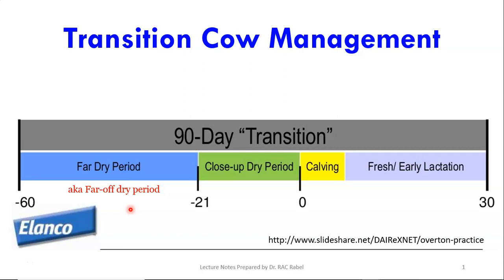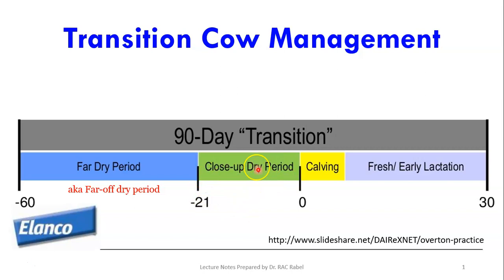During the previous lecture we talked about the drying off procedure. In this lecture on transition cow management, we will talk about the actual dry cow period. The transition cow period has been defined differently by various books — some define a 90-day transition including all of the dry period and the first 30 days after calving, while others use a 60-day or 51-day transition covering three weeks prior to calving and 30 days after calving.